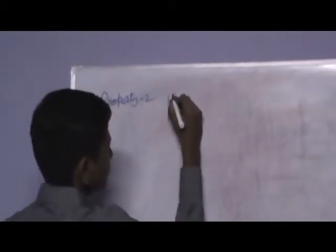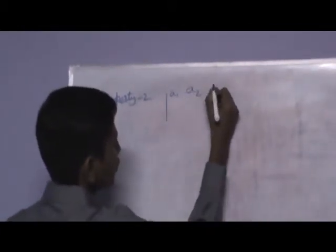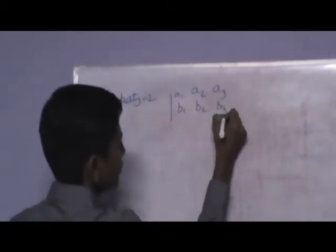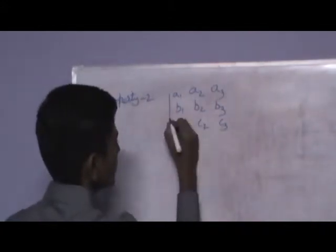Let us take an example. Consider a determinant with elements A1, A2, A3, B1, B2, B3, C1, C2, C3.